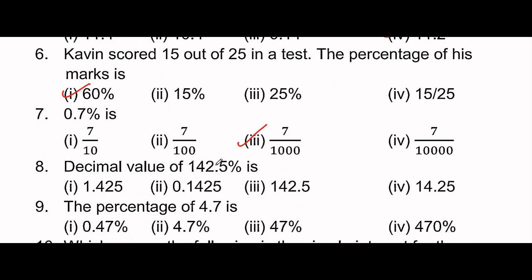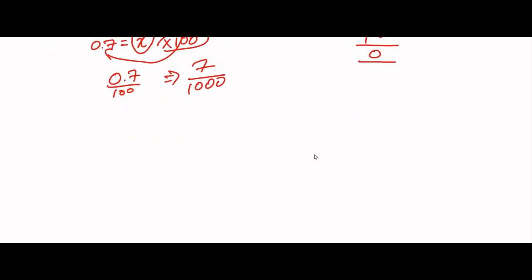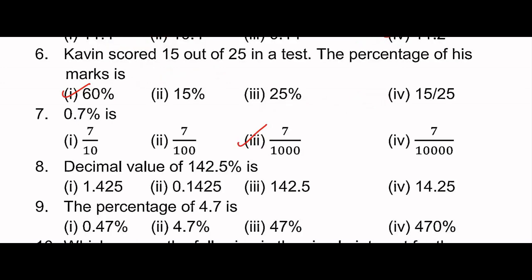Decimal value of 142.5 percentage: 142.5 divided by 100. There are two zeros in 100, so we shift the decimal point two places to the left. So 142.5 divided by 100 equals 1.425. That is the decimal value.